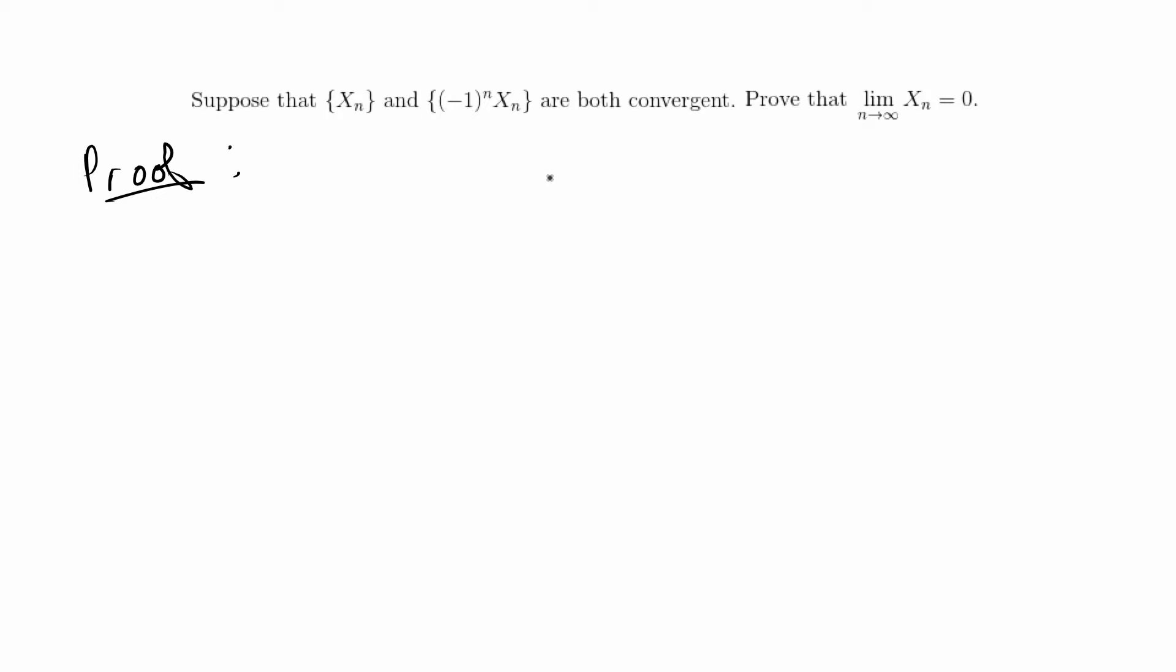One way of approaching this problem is just taking what we're given and kind of expanding what we know for fact based on the theorems that we learned in class. One theorem is that for any sequence that converges, that sequence has a unique limit. If you take the limit of X_n or the limit of (-1)^n times X_n to infinity, that will have a unique limit.